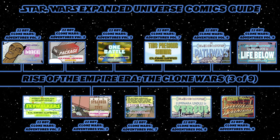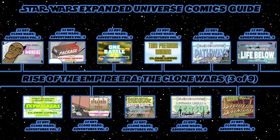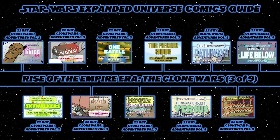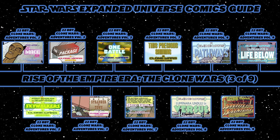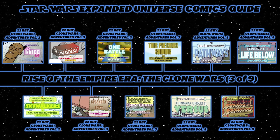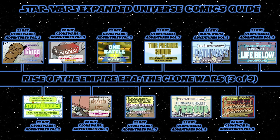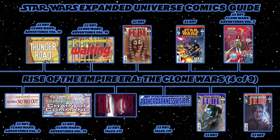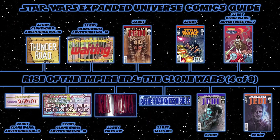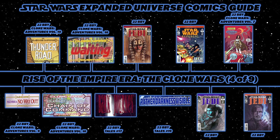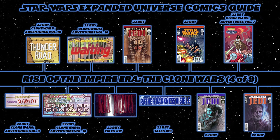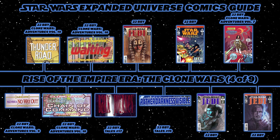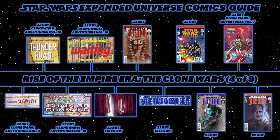Moving into Clone Wars Adventures Volume 8: Versus, a Luminara Unduli story, and Pathways, about a lost battle droid. Then Volume 9's Dexter Jettster story Appetite for Adventure, and the Quinlan Vos story Life Below. Then in the next graphic: Mace Windu in No Way Out from Volume 9, Thunder Road from Volume 10, Chain of Command from Volume 10, and Waiting from Volume 10.